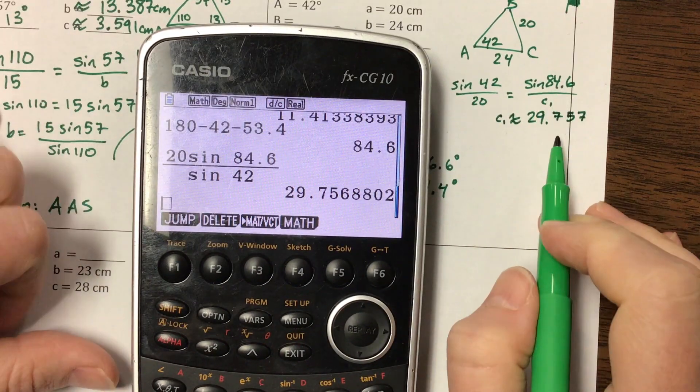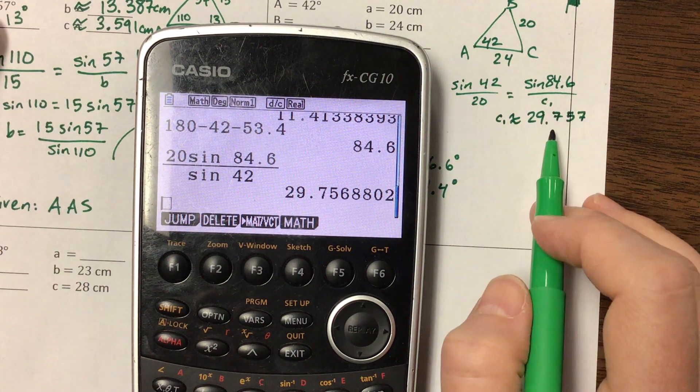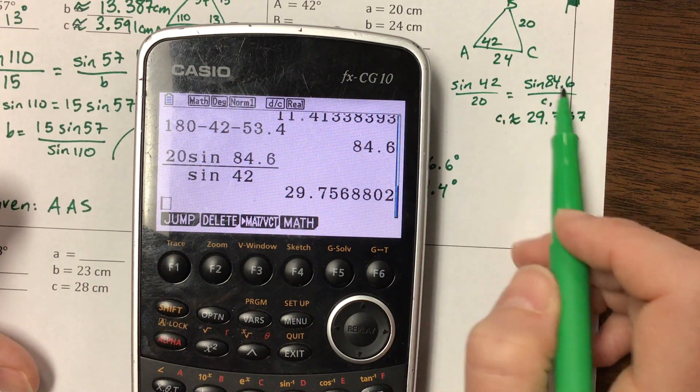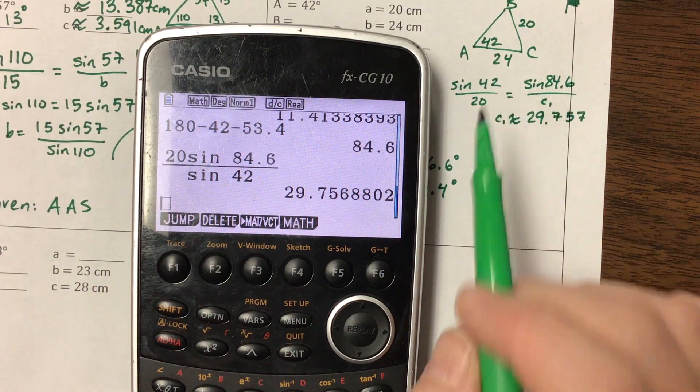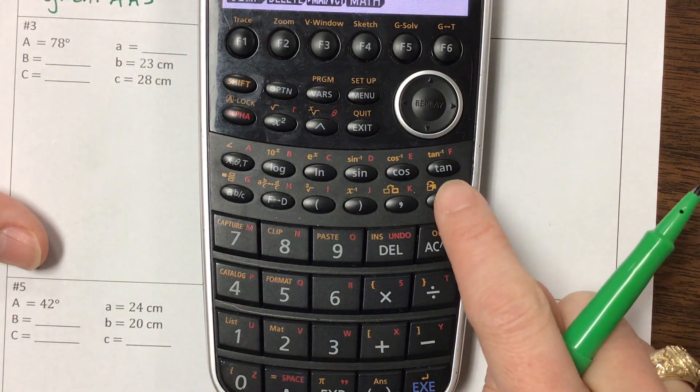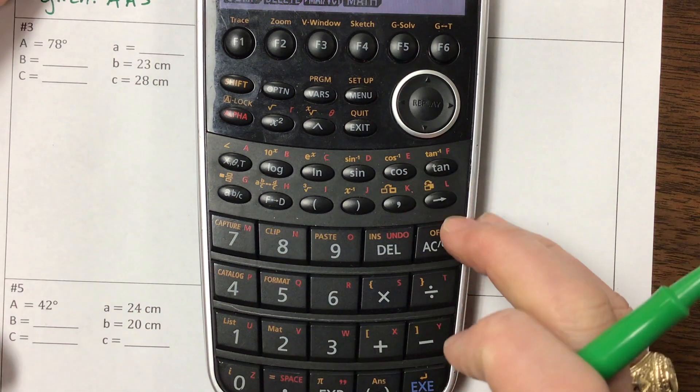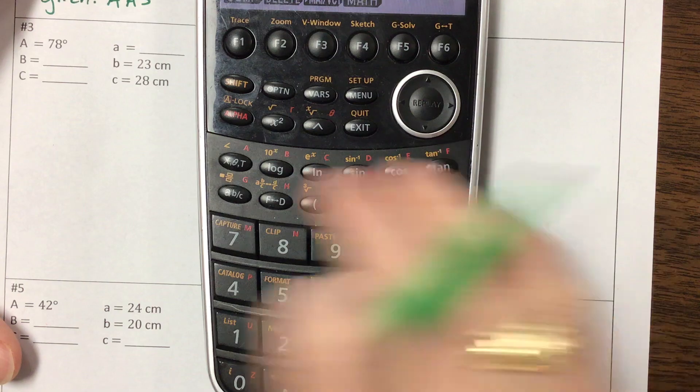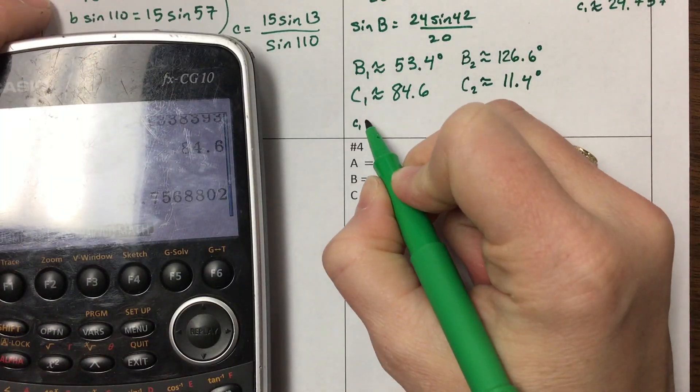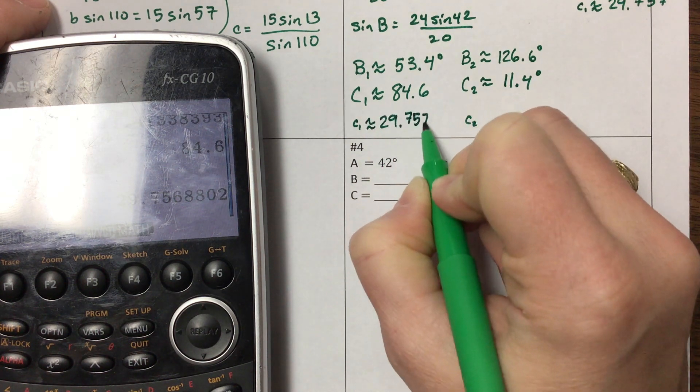Now, granted, this may not be exact because we rounded here, but if you're close to mine, really and truly what we should have done is we should have stored our values and said that we're using exact until the very end. If you remember, the Casio can use this button to store something. So I would have found that angle and then stored it so then I can keep everything exact. I'm not going to go back and do that.